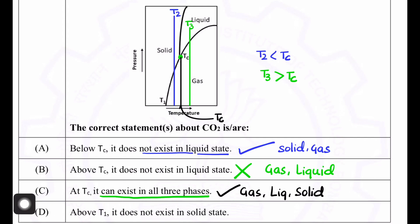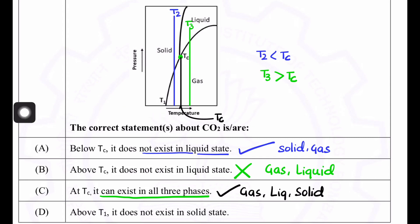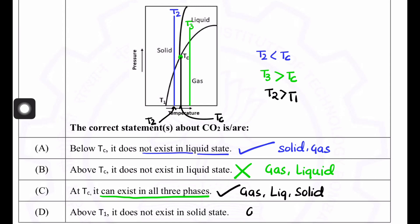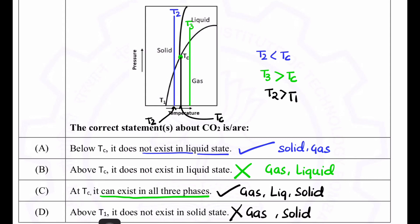Option D says above t1 temperature it does not exist in solid state. At t2 greater than t1, we can see that both gas and solid phases are possible. So option D is incorrect — solid state is still possible above t1.